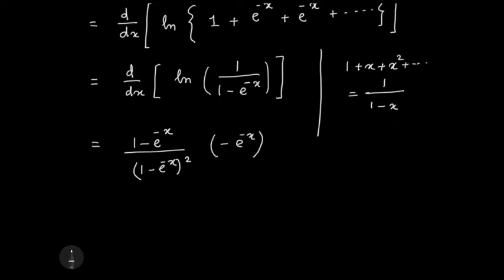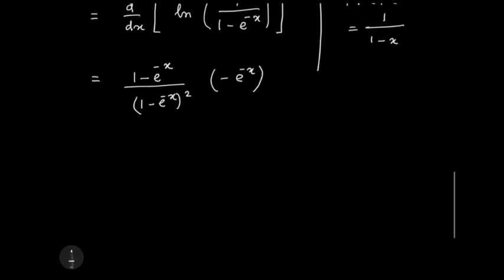So that's what I get here: one of these cancels out, and I take e to the minus x common, which gives me e to the x here, and then minus one.